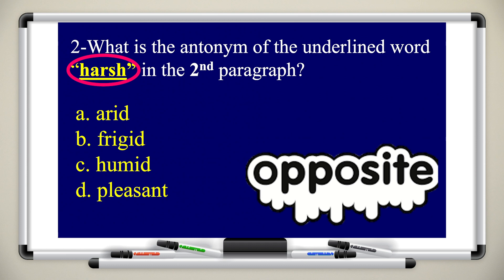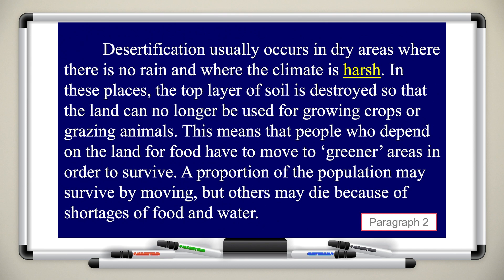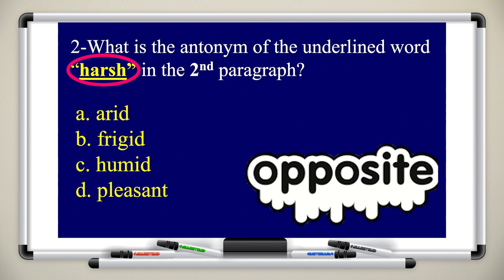Question two: what is the antonym of the underlined word 'harsh' in the second paragraph? Antonym means the opposite of the word. 'Harsh' is underlined in the second paragraph: 'Desertification usually occurs in dry areas, where there is no rain and the climate is harsh.' What's the opposite? Is it arid, frigid, humid, or pleasant? Of course, the antonym of 'harsh' is pleasant.